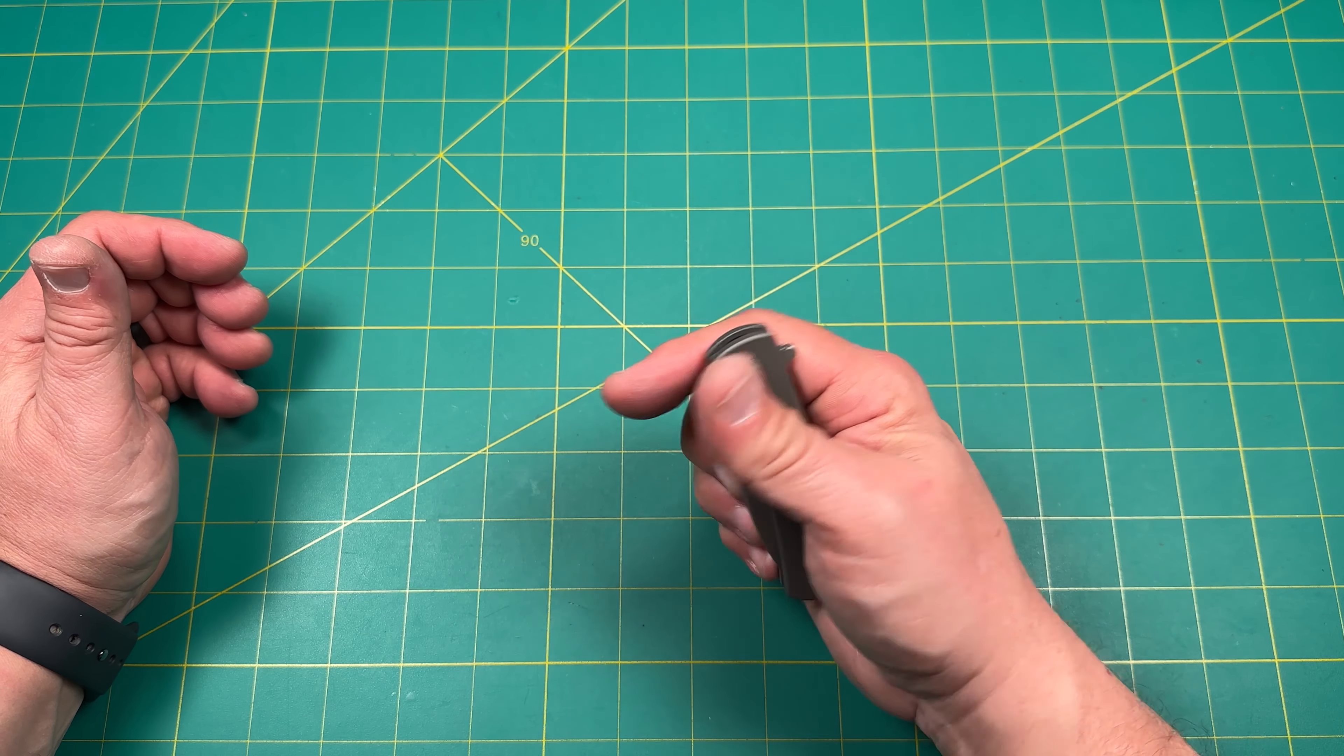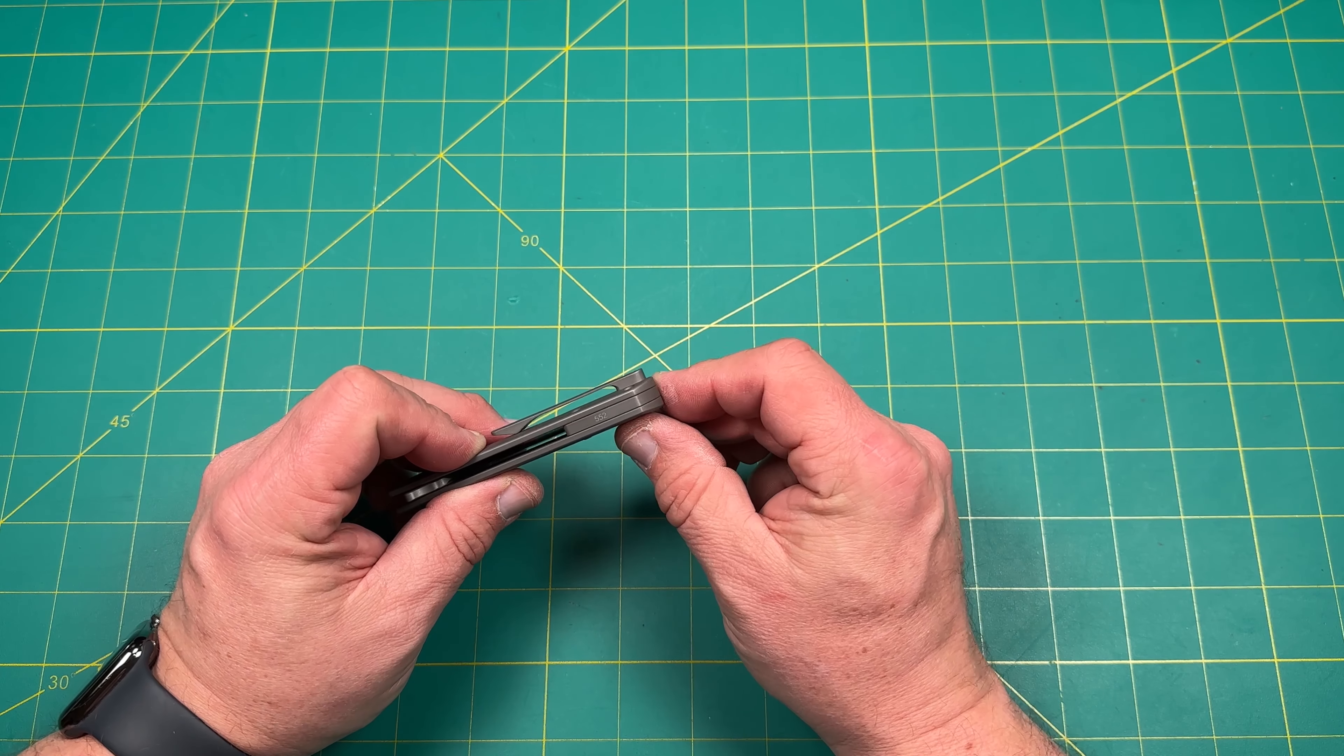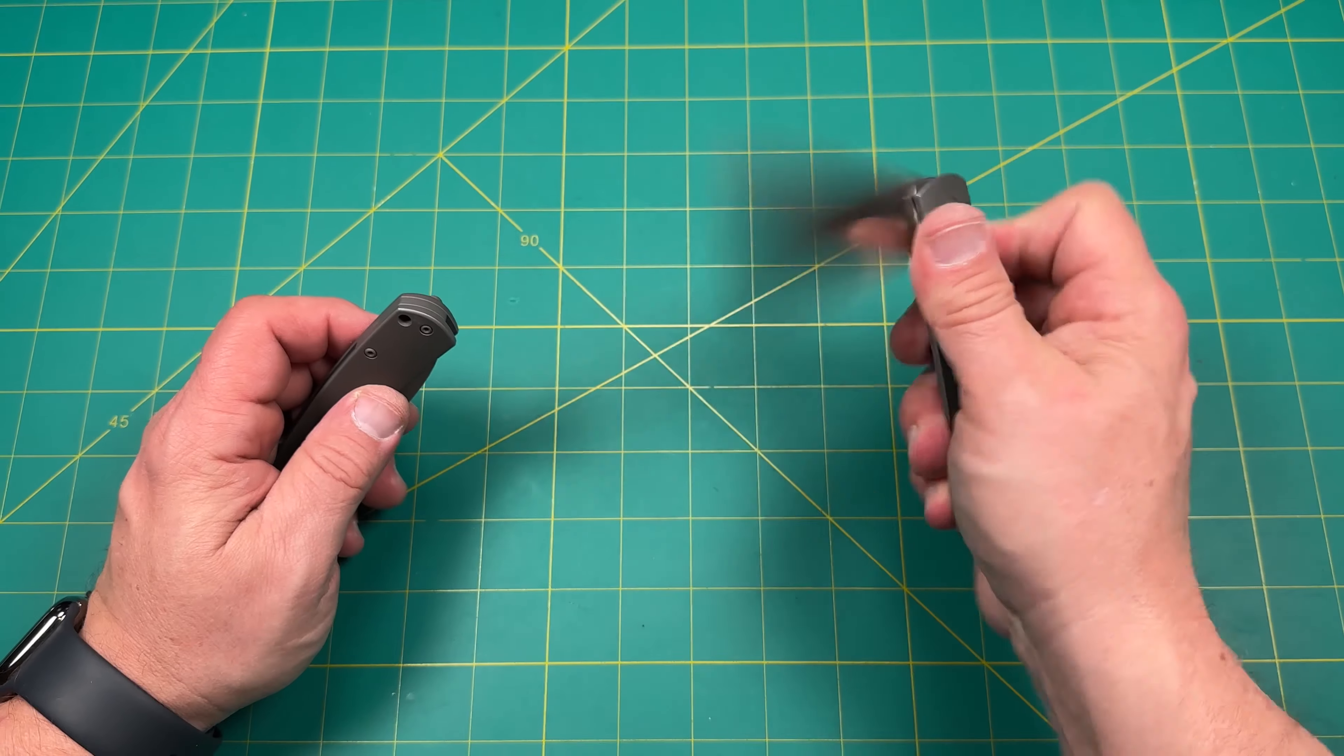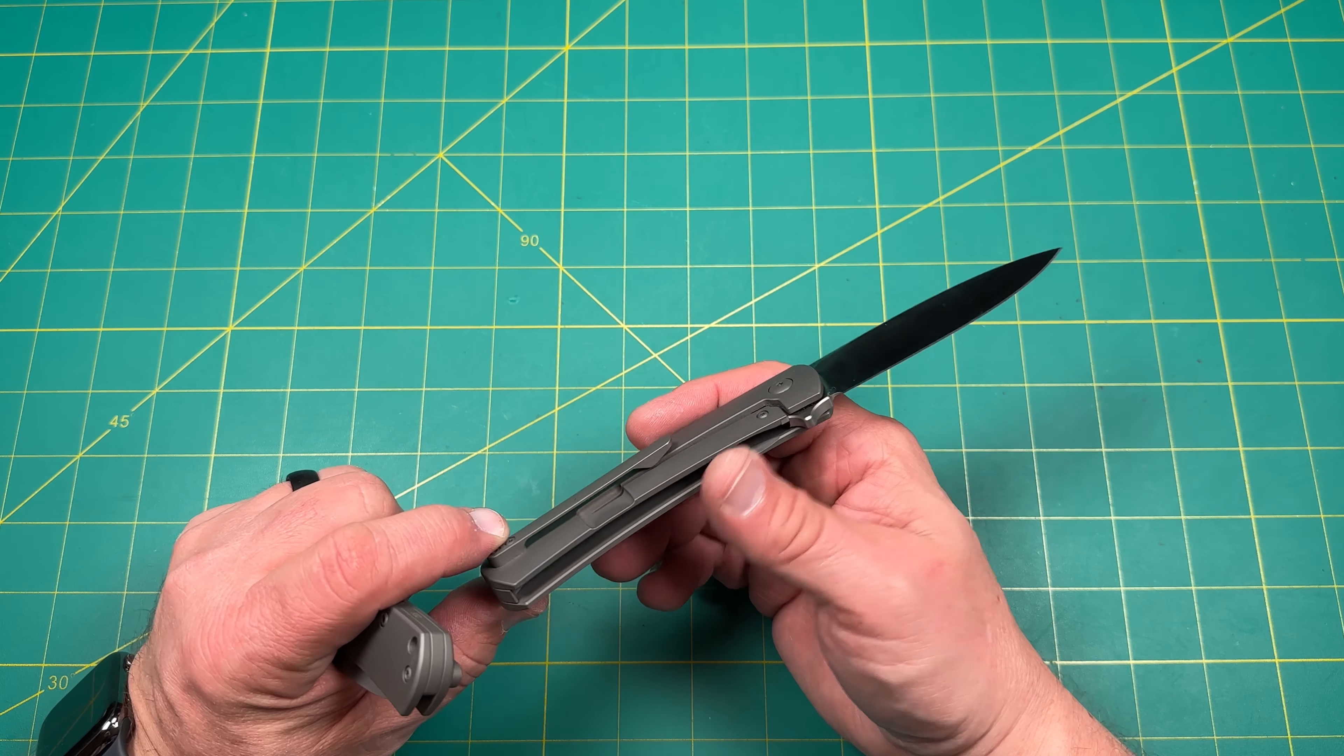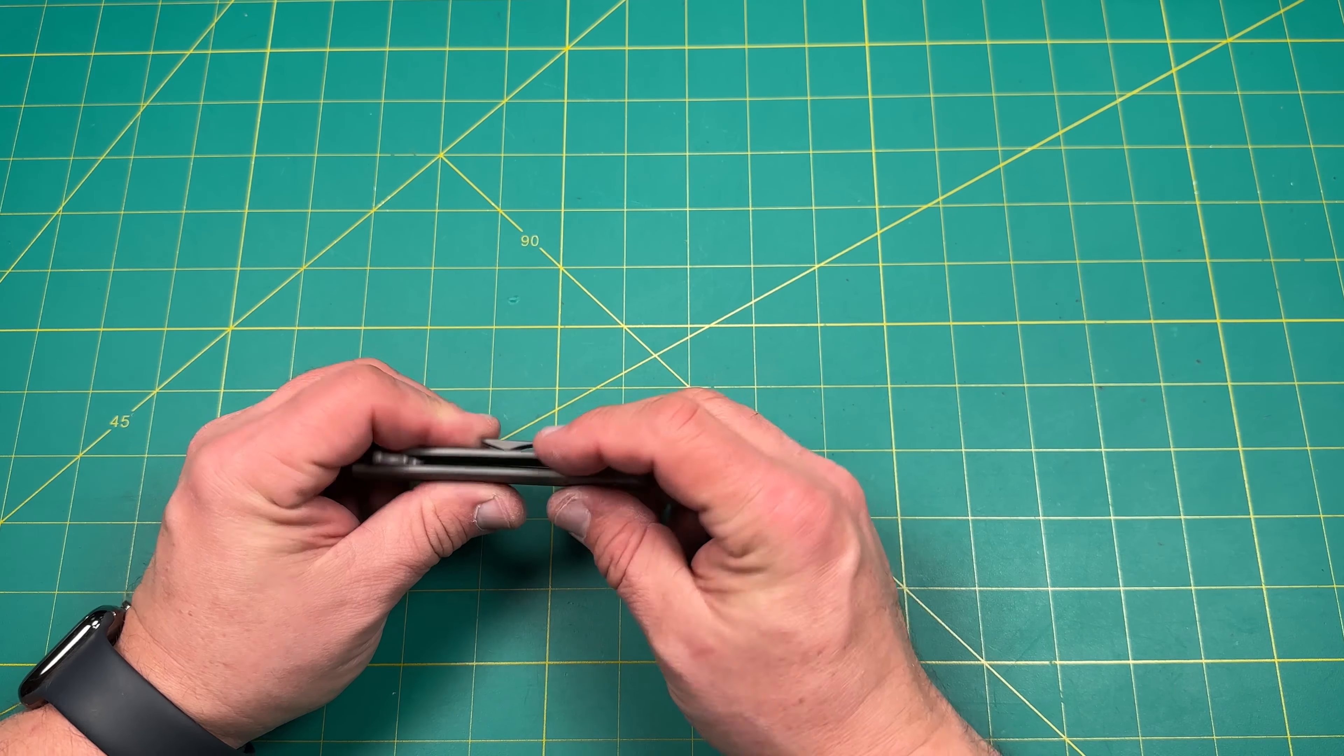The scales here are titanium and titanium backspacer. This is number 552. Was the number on this one or was it on the inside? I think the number here was on the inside somewhere. Maybe. Well, there's a number on here, 552.